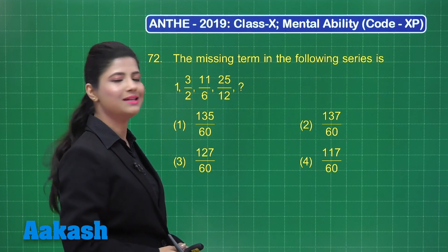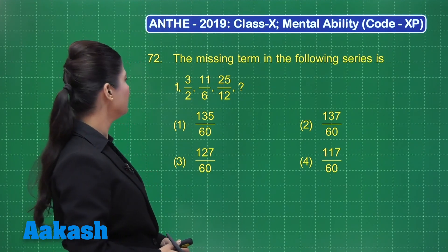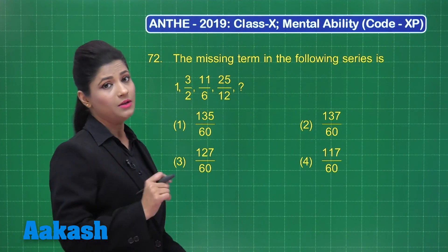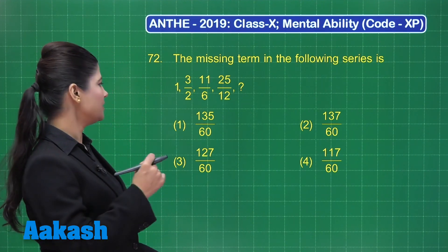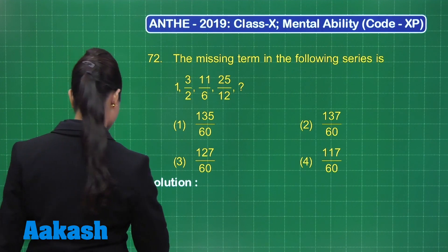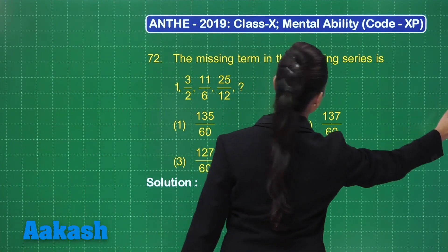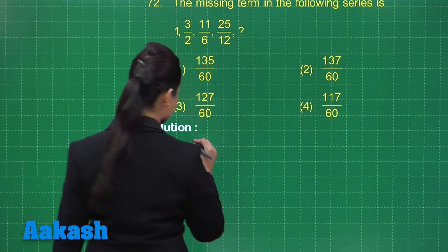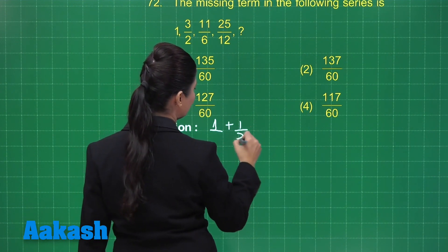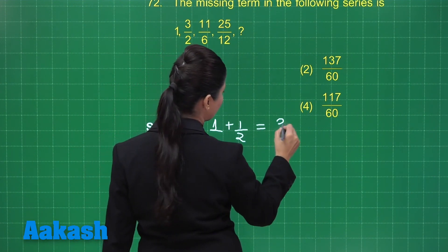Let's proceed to the next question. This question states: the missing term in the following series is — you can see four terms: 1, 3/2, 11/6, 25/12. You need to obtain the next term, so let's identify the pattern. The first number is 1; when you add 1/2 to 1, you get 3/2.